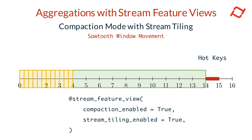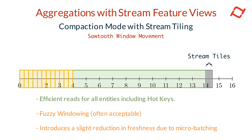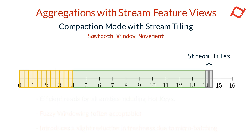When stream tiling is enabled, Tekton also compacts the incoming stream data written to the online store. Instead of writing each individual stream event directly, Tekton uses stateful stream processors to pre-aggregate data into manageable tiles. This dramatically improves performance, reducing the worst-case retrieval and storage complexity per key from O(n) to O(1). Tekton automatically determines the appropriate stream tile interval based on the smallest aggregation window among all columns in the feature view. However, there is a trade-off: stream tiling introduces a slight reduction in data freshness due to micro-batching, meaning updates are not as immediate as in continuous stream processing. Stream tiling is therefore best suited for use cases where real-time freshness is less critical, but efficiency and performance are paramount.